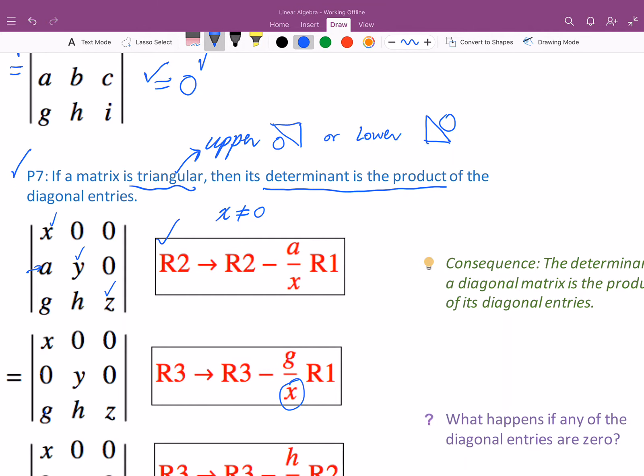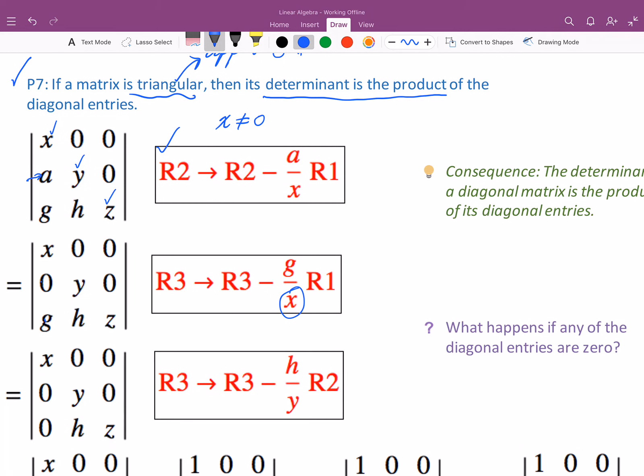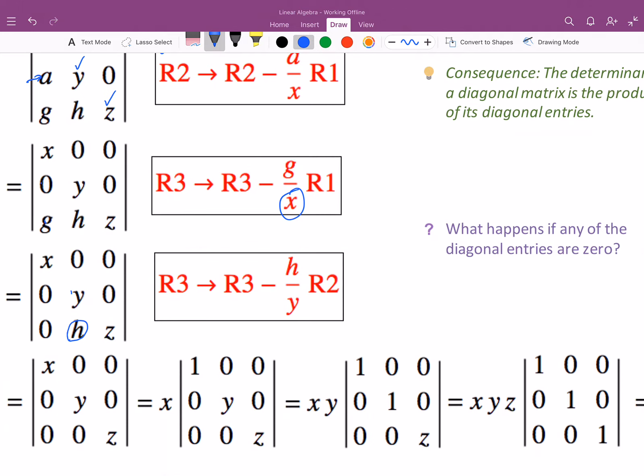Similarly, since x is not 0, we could do this. We eliminate g using the first row, and here we have x 0 0. That's nice. Let's continue elimination by changing the h to 0 using the second row.